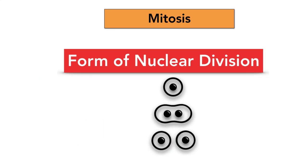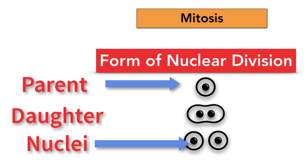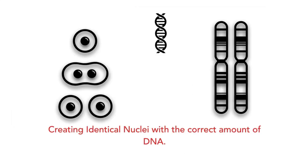So what is mitosis? It's a form of nuclear division. It's how one parent nucleus will give rise to two identical daughter nuclei, and they are identical because they contain exactly the same DNA.